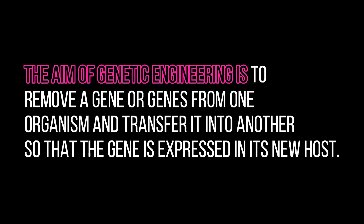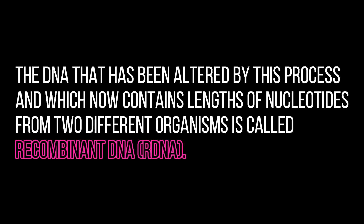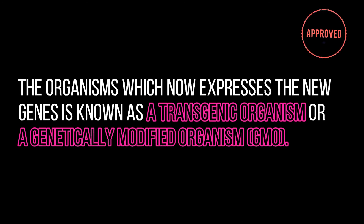The aim of genetic engineering is to remove a gene or genes from one organism and transfer it to another, so the gene is expressed in its new host. The DNA that has been altered by this process — which now contains a length of nucleotides from two different organisms — is called recombinant DNA. The organism that now expresses the new gene is known as a transgenic organism, or a genetically modified organism, or GMO.